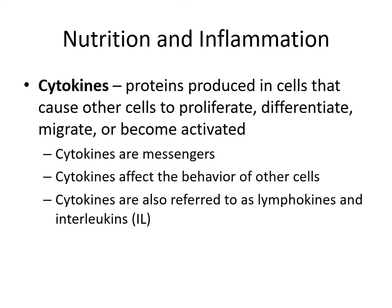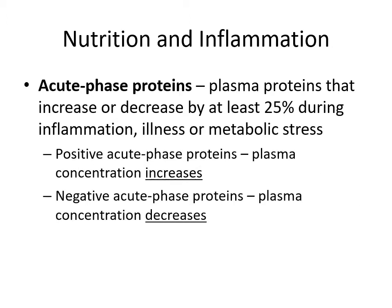Cytokines act as messengers and affect the behavior of other cells; they're also referred to as lymphokines or interleukins. As a review for our acute phase proteins: these are plasma proteins that increase or decrease by at least 25 percent during inflammation, illness, or stress.